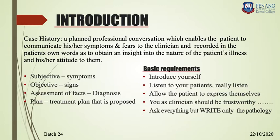Basically, these are the four main things you have to take care of when taking a case history: Subjective, Objective, Assessment of facts, and Plan. Subjective refers to the patient's symptoms — you have to elicit those symptoms in the patient's own words. That will give you a better idea rather than giving hints to the patient. Don't suggest symptoms like 'are you in pain?' or 'are you having bleeding gums?' — instead, ask why the patient visited the clinic.